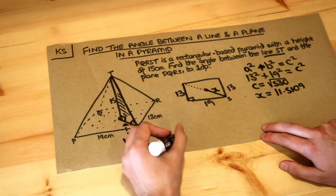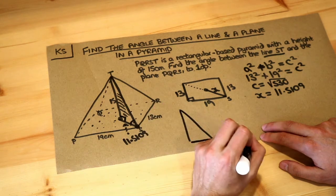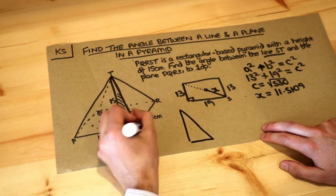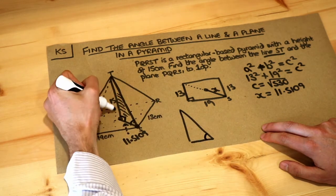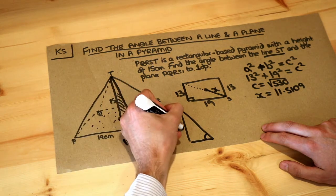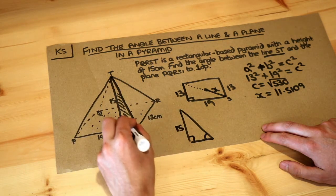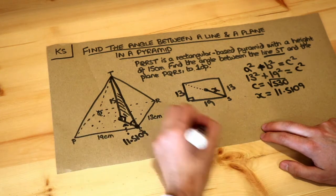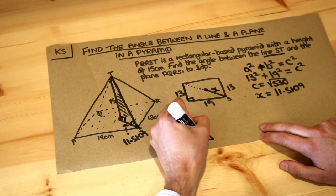Now if we draw out this triangle separately, it might make it easier to see what we're trying to find. We're trying to find this angle here. We've got that vertical height, which is 15. That's a right angle. And we've got the length of the bottom, which was half the diagonal of the base, which is 11.5109.